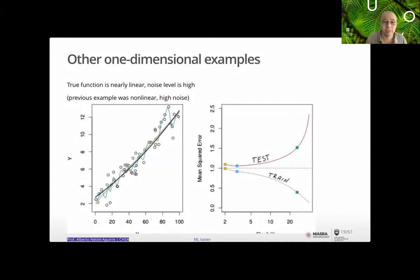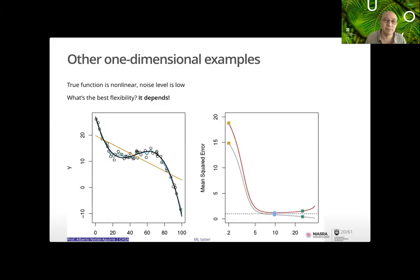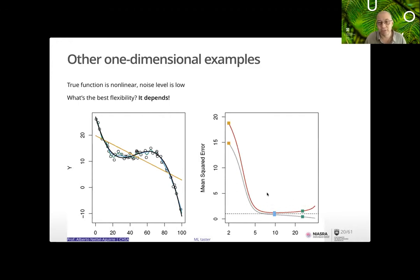Consider another one-dimensional example where the true function is nearly linear but with a lot of noise — a line or polynomials of different degree. The training MSE always comes down, but the test MSE starts increasing at some point because we're getting close to points but increasing variability. In a non-linear function with low noise, there's clearly gain as you get a little more complex, but you start losing once you get too complex.